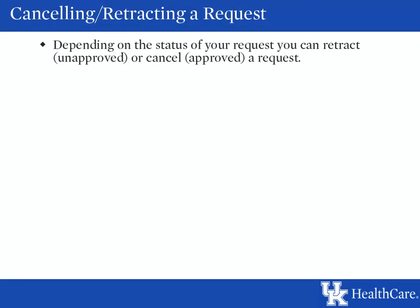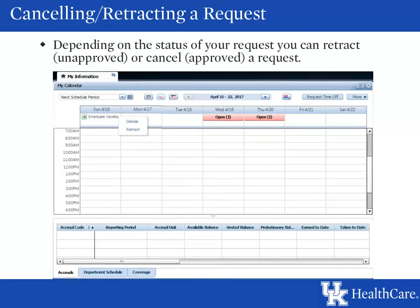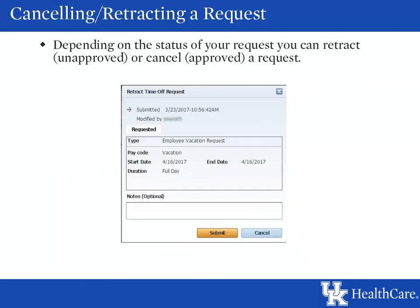If you need to cancel or retract your request you can do so easily from your calendar. Retract is used for unapproved items and cancel is used for approved items. These steps apply to all requests such as self-scheduling, schedule swaps, and time off requests. Locate the item in your calendar, hover over it, and click the blue circle with the right-pointing arrow. Select Retract or Cancel depending on the status. If you want to enter a note to your manager explaining why, you can, but it is not required. Click Submit when finished.